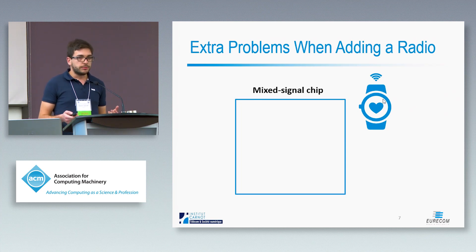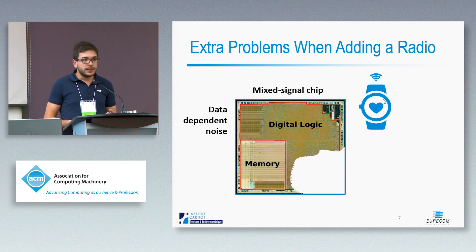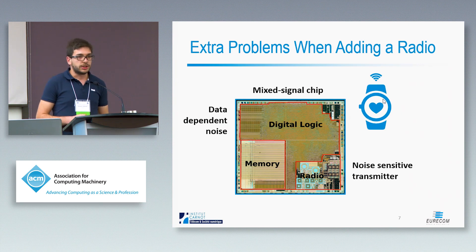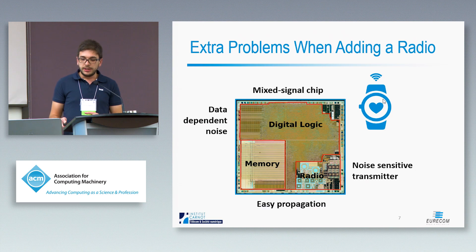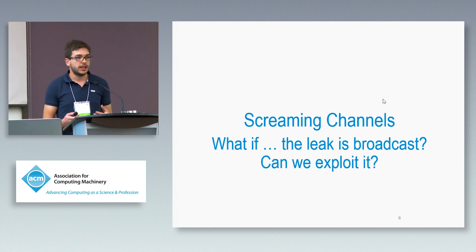One popular architecture is the so-called mixed signal chips. They contain the digital logic — the processor, peripherals, and other hardware blocks — which generates data-dependent noise on which side channel attacks are based. But it also contains, on the same silicon die, the radio logic. Even though we are talking about digital radio protocols, the underlying hardware components are analog, and analog components are noise sensitive. They are on the same silicon die, so there are many paths through which noise can propagate from one side to the other.